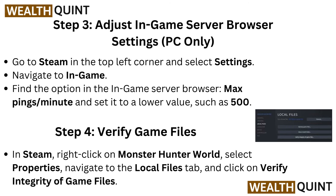Step 3: Adjust in-game server browser settings — PC only. Go to Steam in the top left corner and select Settings. Navigate to In-Game. Find the option for the in-game server browser, Max Pings per Minute, and set it to a lower value such as 500.